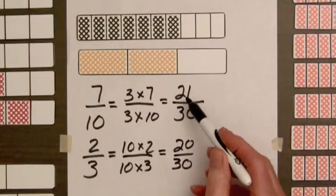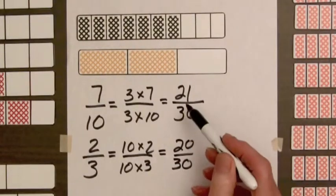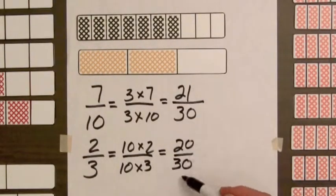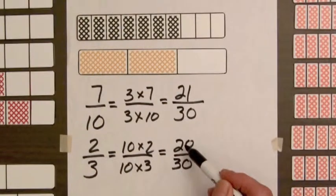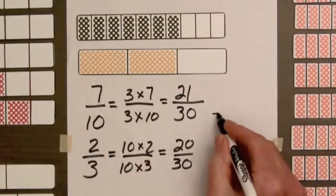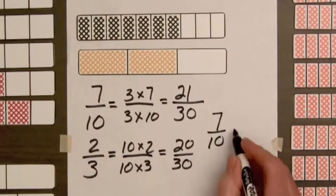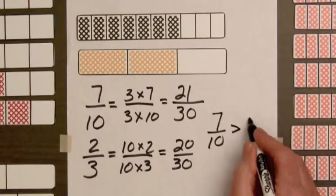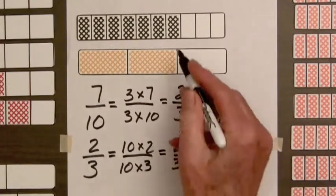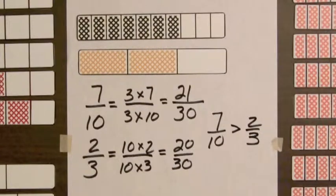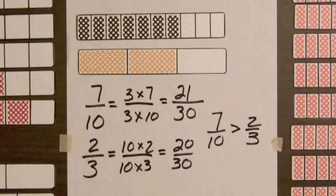Now since 21 is greater than 20, this fraction is greater than this fraction, and therefore 7 tenths is greater than 2 thirds, which we can see anyway from the bars. So finding common denominators for two fractions will always show which is the greater fraction. Let's look more closely at what we did to get these fractions for the common denominators.